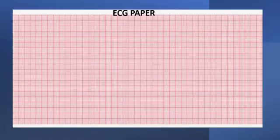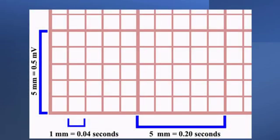Now let's have a look at a blank ECG paper. Looking closely, it is made up of large and small squares. Each small square equates to 0.04 seconds on the horizontal or x-axis, whereas on the vertical or y-axis each small square is 1 millimeter. This helps to categorize ST elevation myocardial infarction. Each big square equates to 0.2 seconds, and on the vertical axis it is 5 millimeters or 2.5 millivolts.